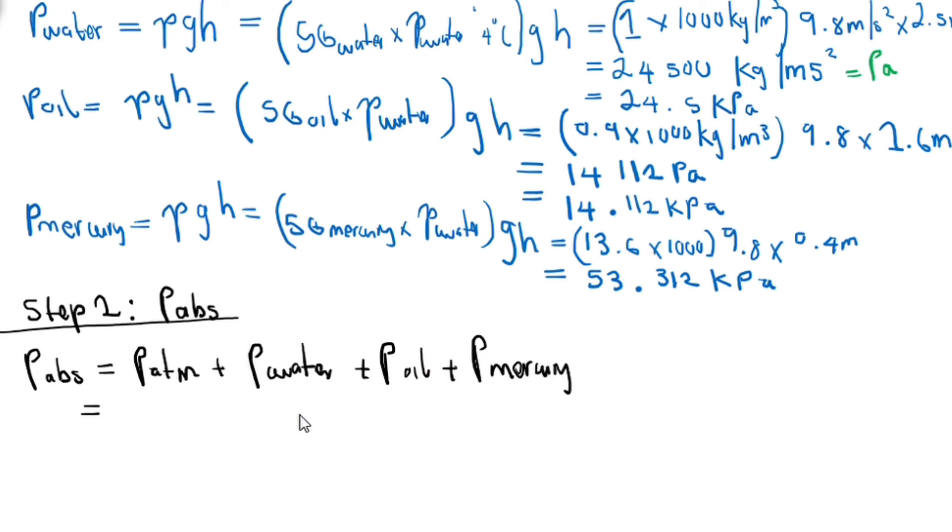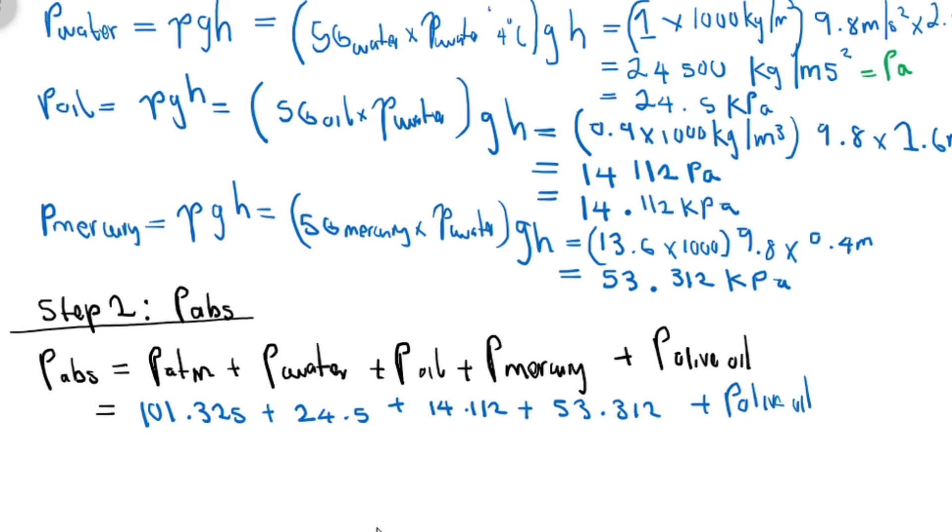We know that atmospheric pressure is 101.325 plus that of water, which we just calculated to be 24.5 kilopascal, plus that of oil, which was calculated to be 14.112, plus that of mercury, which was calculated to be 53.312, plus the pressure of the olive oil. We do not know the pressure of the olive oil, hence I'm going to make it subject of the formula. We are given this to be 233.5. If I make the olive oil gauge pressure subject of the formula and calculate this, you should get 40.251 kilopascal.